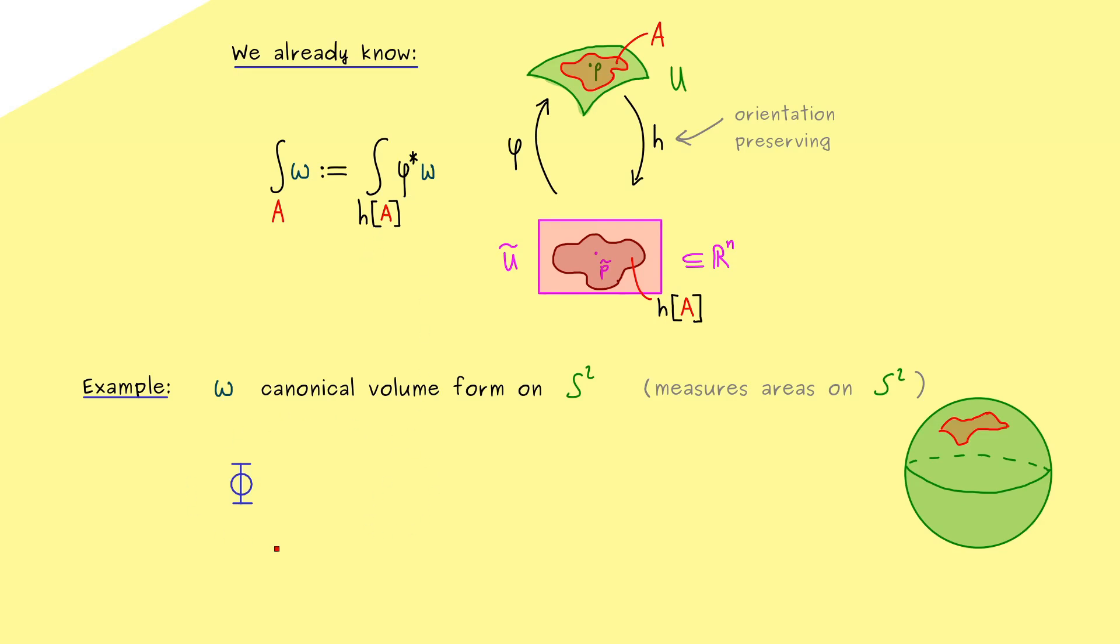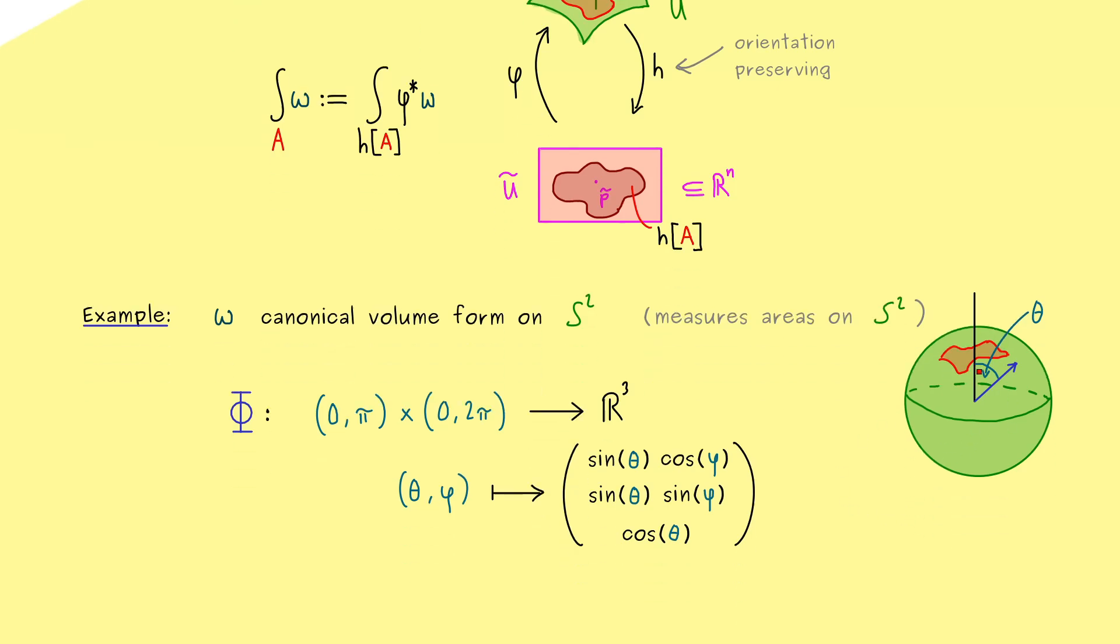I want to call it capital phi, simply because we want to use the spherical coordinates as always. There we already have an angle called lowercase phi. Namely, it's the second angle that goes from 0 to 2π. The first one we call usually theta and the second one phi. We map them to R^3 to describe our sphere S^2. We have already discussed that in former videos. You already know that we need the cosine and the sine functions. More precisely, we have sin(θ) in the first two components and cos(θ) in the last component. This means that theta describes the angle coming from the north pole, and phi is the angle of rotation in the xy plane.